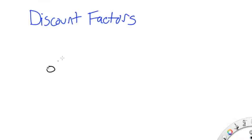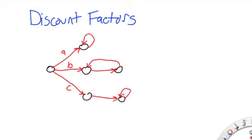In this question, we're going to compare discount factors. So here's a little simple MDP from this state here. There are three actions, A, B, and C.